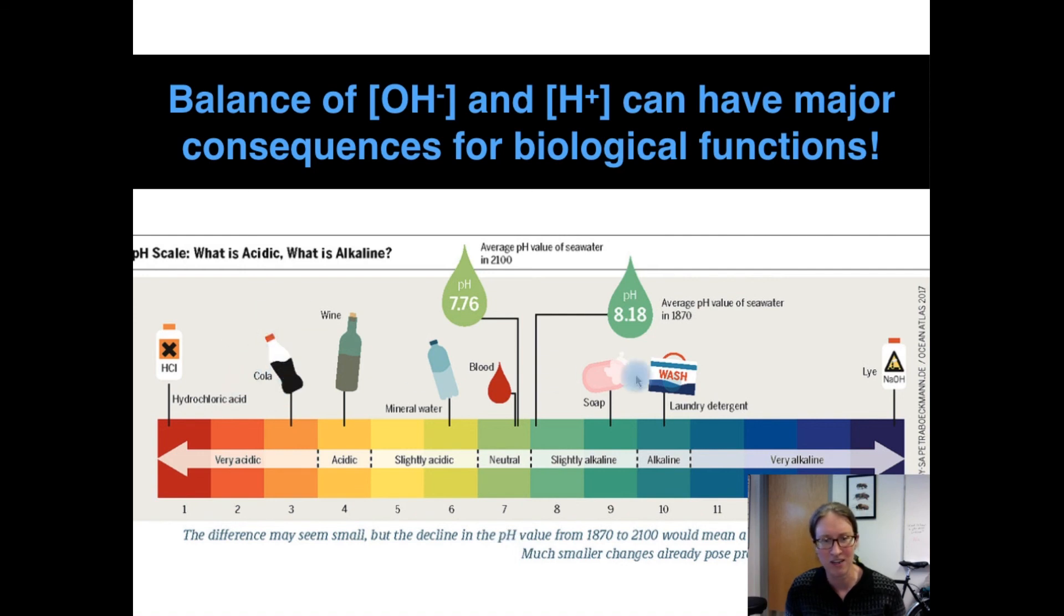And in fact, our stomach's pH is very strongly acidic. It's down here, around two or one. And that's actually part of why our stomach is so effective at breaking down food.